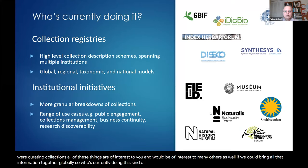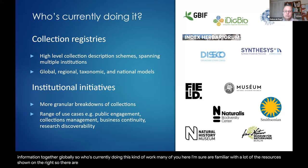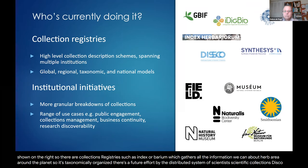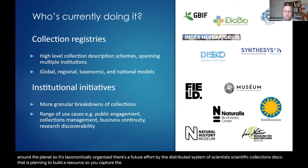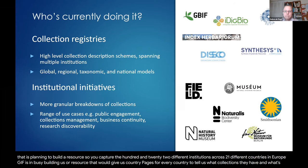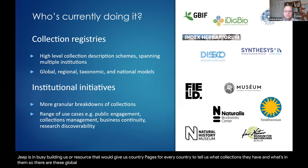So who's currently doing this kind of work? Many of you are familiar with resources like Index Herbariorum, which gathers information about herbaria around the planet — taxonomically organized. There's a future effort by the Distributed System of Scientific Collections (DiSSCo), planning to build a resource to capture metadata from 122 different institutions across 21 countries in Europe. GBIF is building a resource with country pages for every country to show what collections they have. So there are global, taxonomic, national, regional, and institutional efforts such as those at the Smithsonian and the Field Museum.